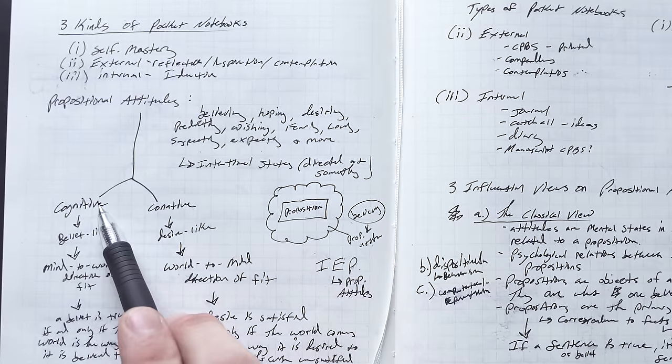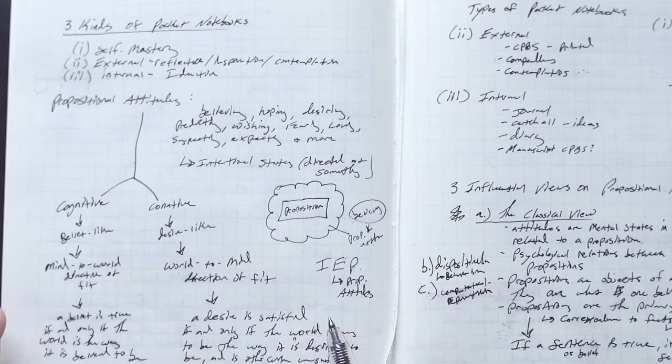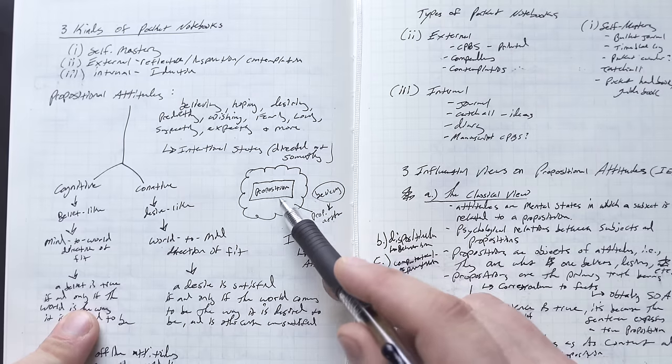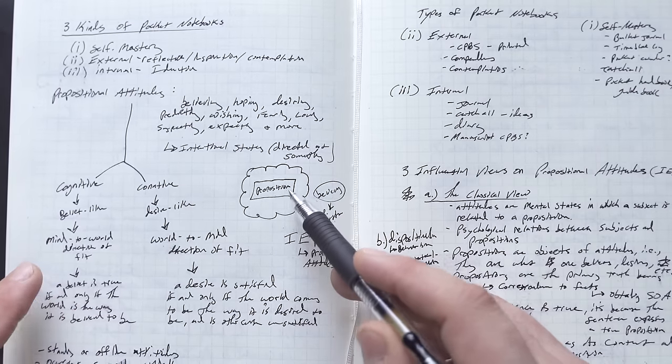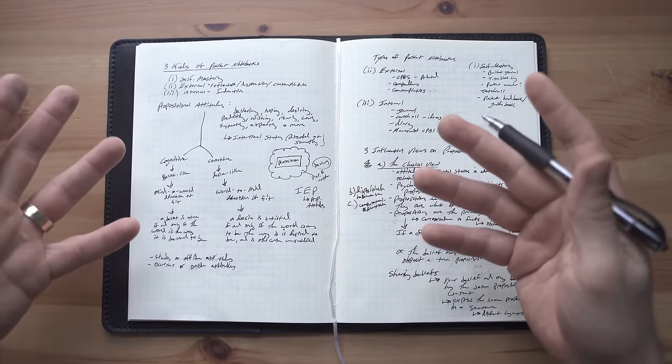These belief-like ones that are cognitive, they're said to have a mind-to-world direction of fit. So a belief is true if and only if the world is the way it is believed to be. So my belief that the cat is on the mat is true if and only if the cat actually is on the mat. If that state of affairs is obtaining, if that fact is true.